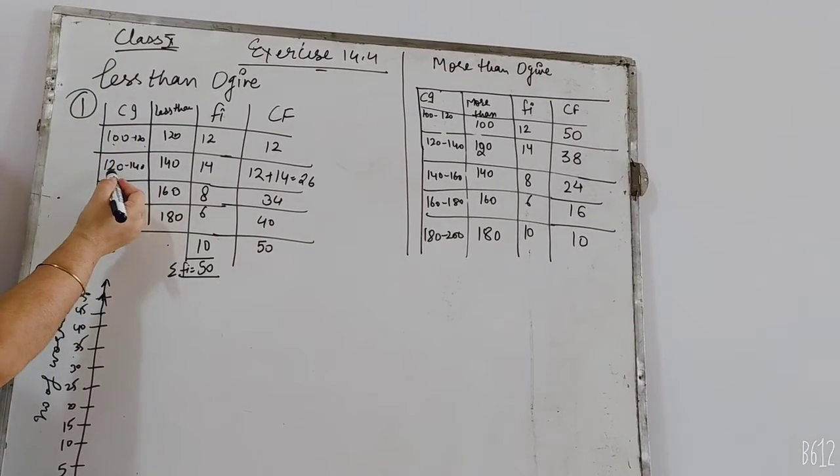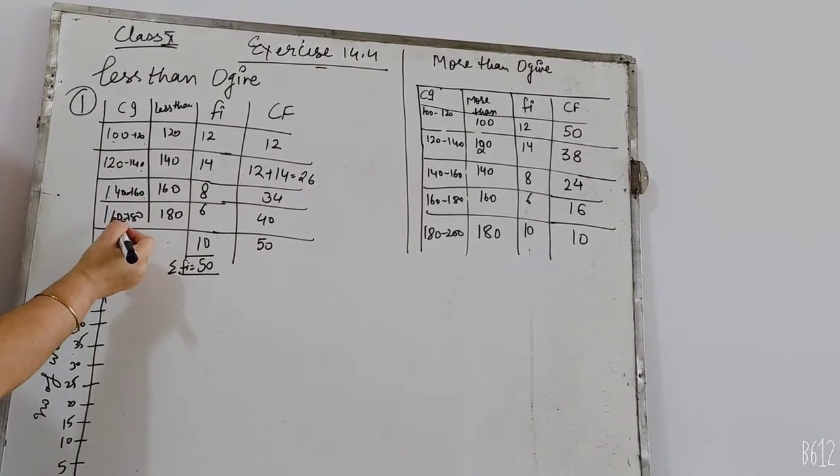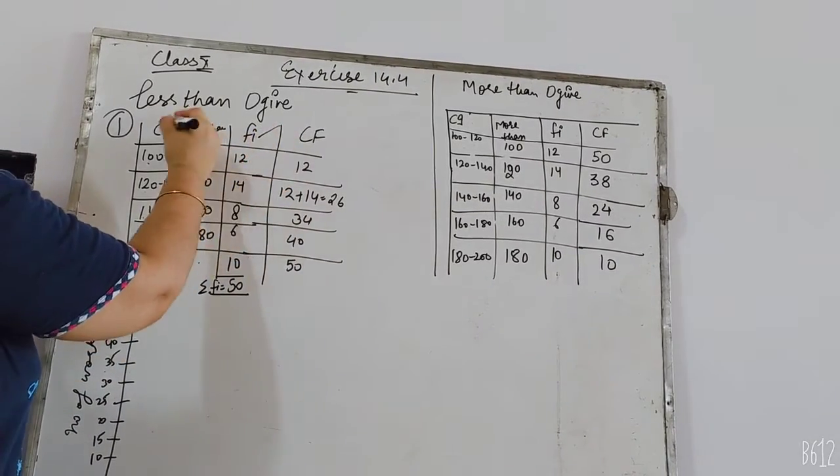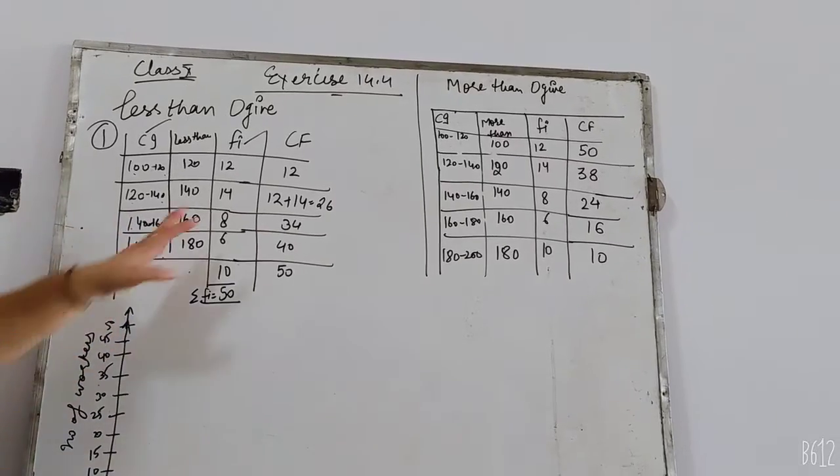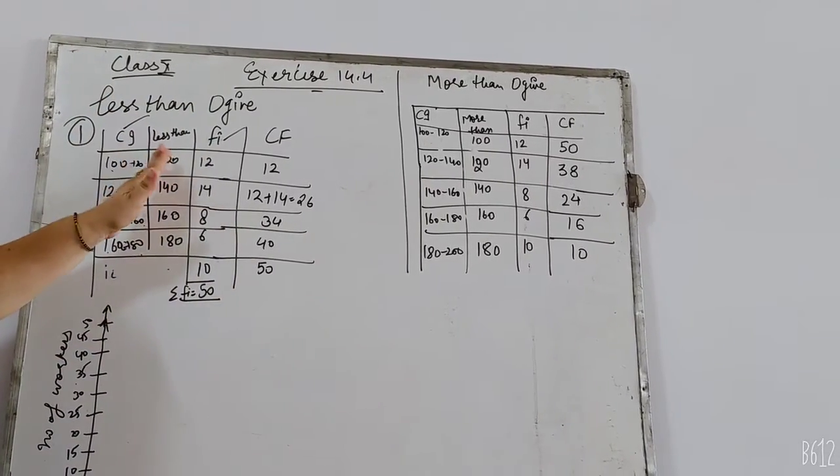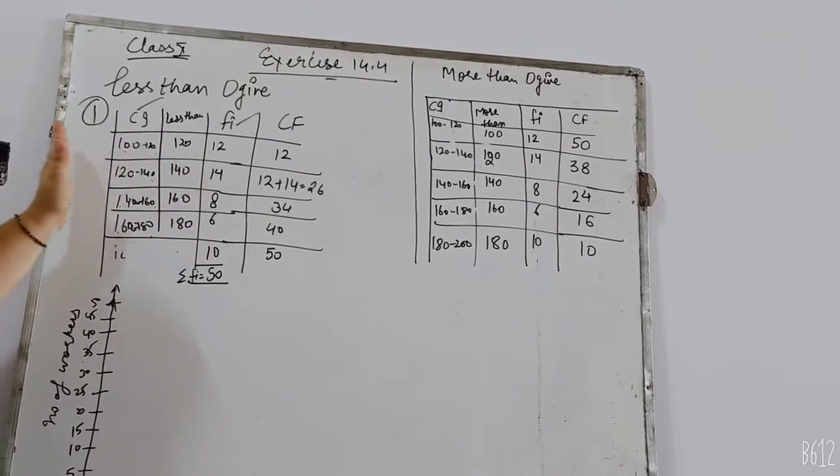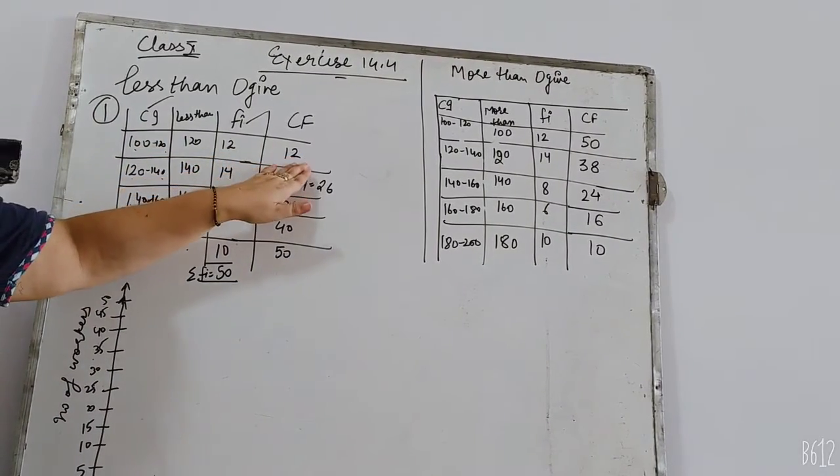The intervals are 100 to 120, 120 to 140, 140 to 160, 160 to 180. And you have given frequency. These two things you have given in question. So, what does less than mean? What does less than chart mean? You can see, 100 to 120. So, 120 is less than all. How much is 120? 12. So, I have 12.